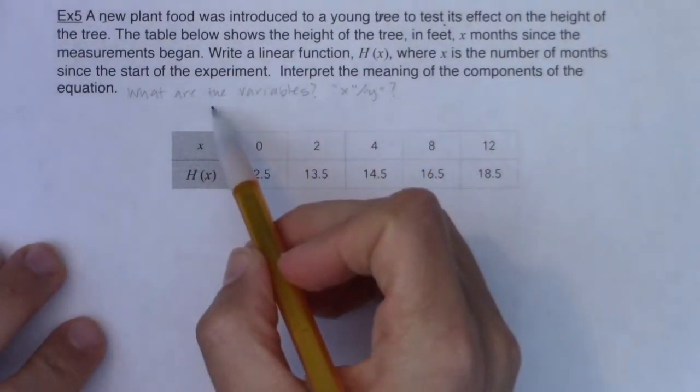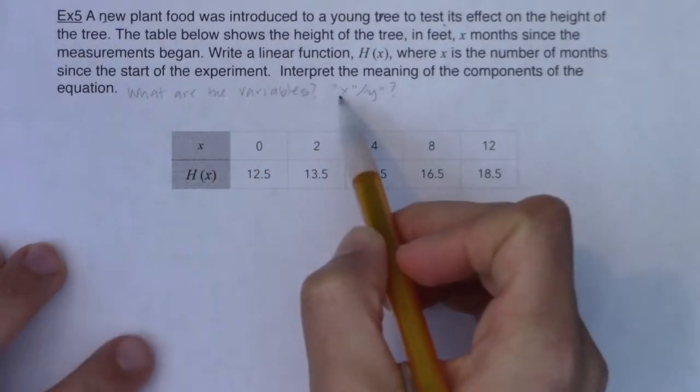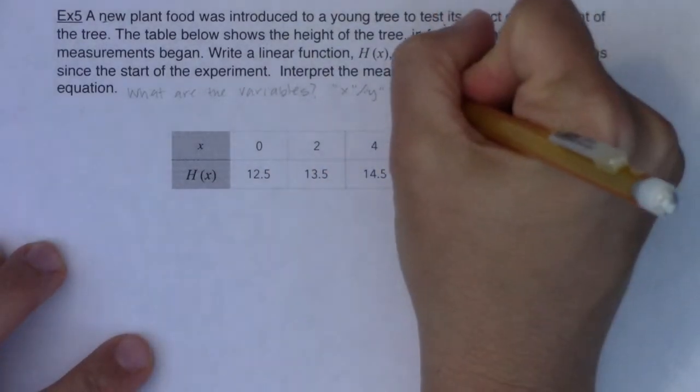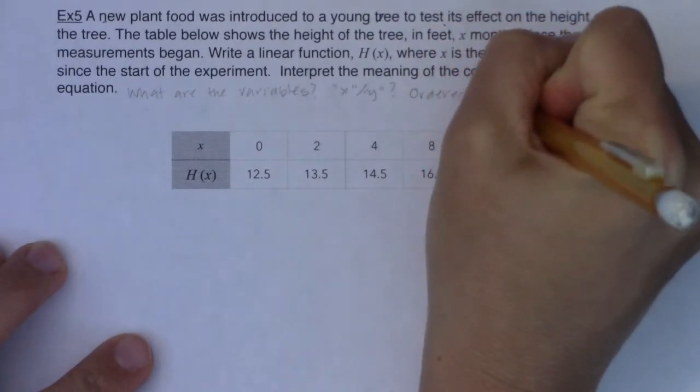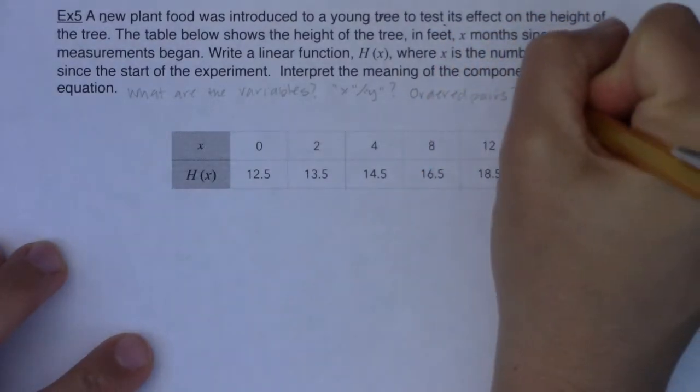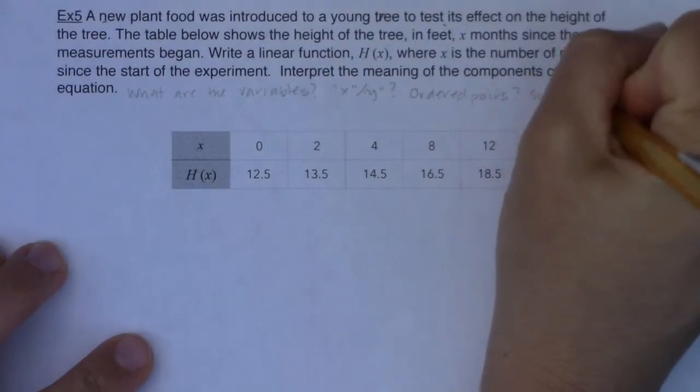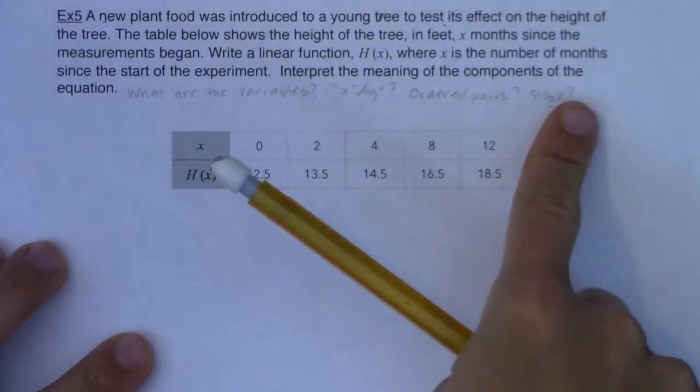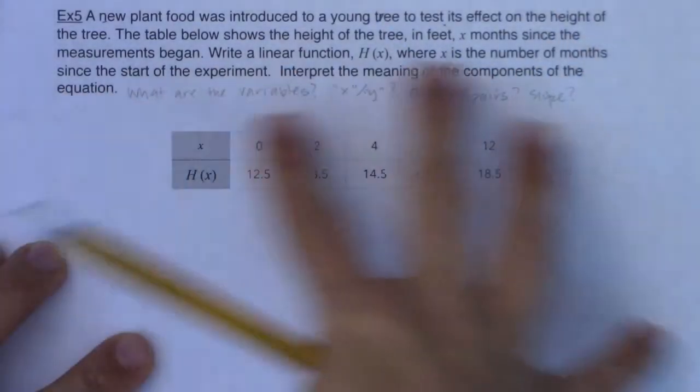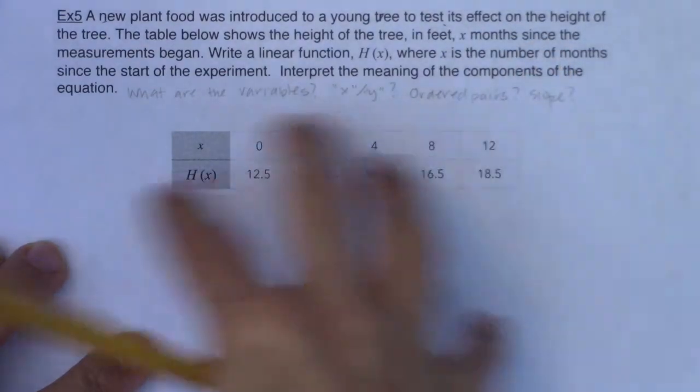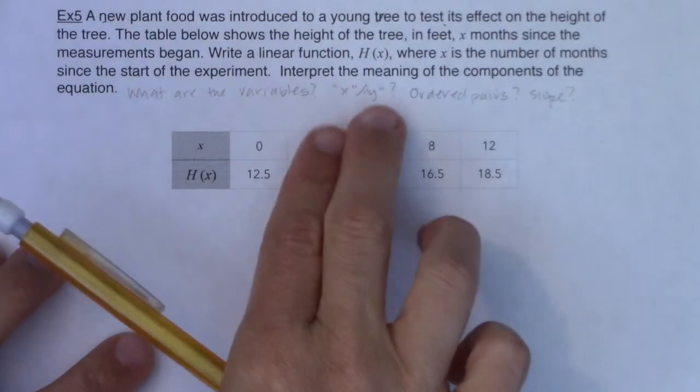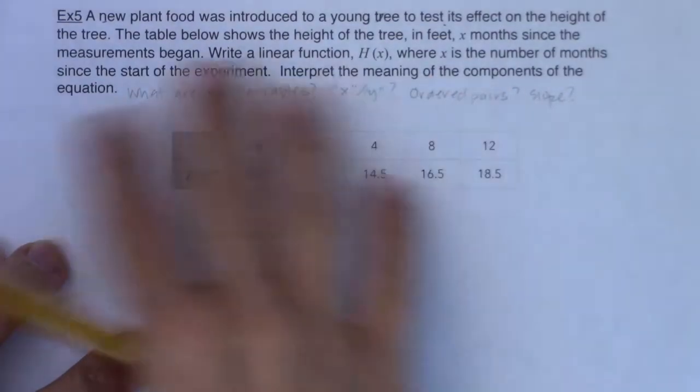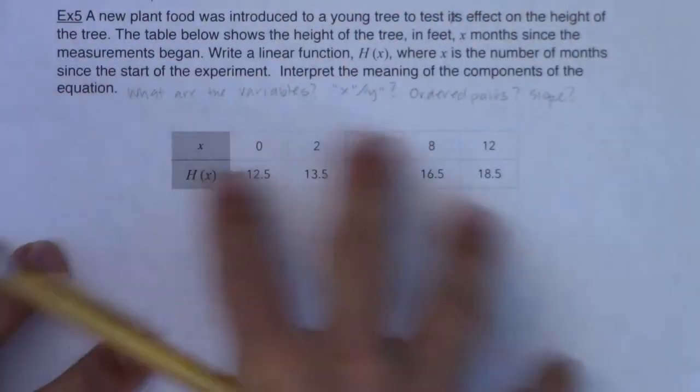So what are the variables? What are X and Y, and then did, were you given any ordered pairs? If it's a linear function, were you given the slope? Were you given one of each of these, just the slope, just the ordered pairs? It all depends on the wording of the problem, and it'll change each time out. But for chapter four, these are very good questions to ask yourself.